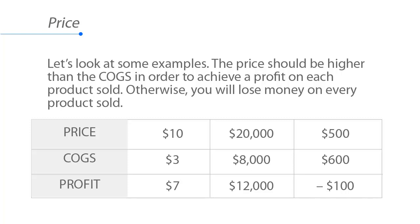As shown in this table, the price should be higher than the COGS in order to achieve a profit on each product sold. Otherwise, you will lose money on every product sold.